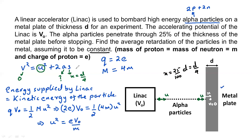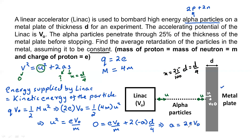Substituting into the third equation of motion: 0 = eV₀/m + 2·(−a)·(d/4). Since it is a retardation, acceleration is negative. Solving for a gives the retardation equal to 2eV₀/md. That is the retardation of the alpha particles experienced inside the metal plate.